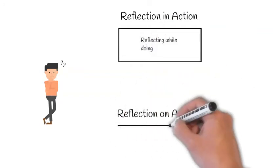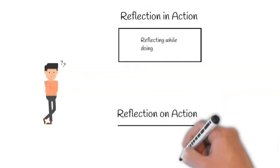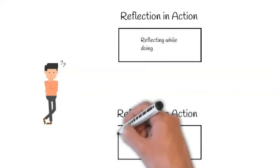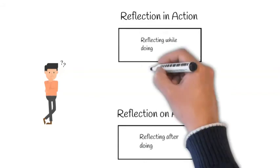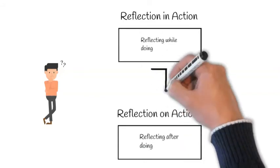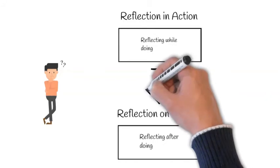Reflection on action is also very helpful in developing the ability to shift between systems one and two effectively. This is particularly useful after a challenging case or when things didn't go as planned. Reflection on action essentially helps us build a better system one for future action.